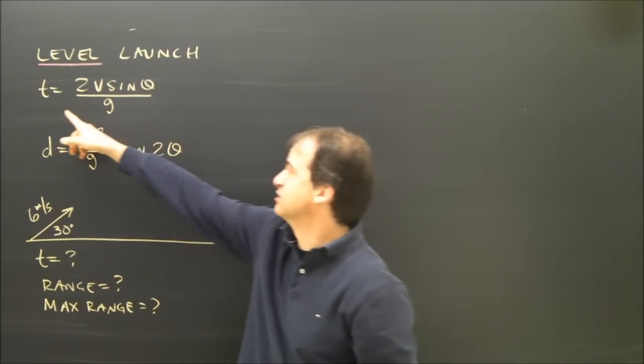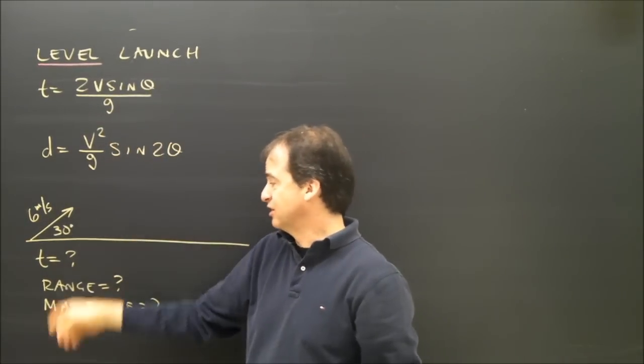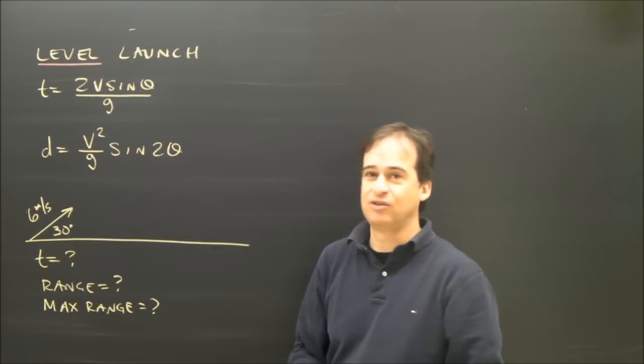And this is really two simple formulas. The time is 2v sine theta divided by g, and the horizontal distance or the range is v squared over g sine 2 theta.